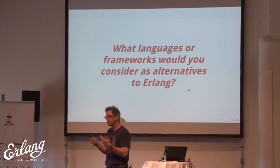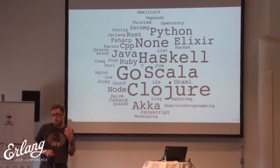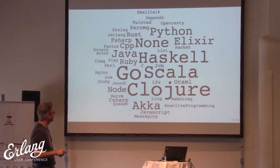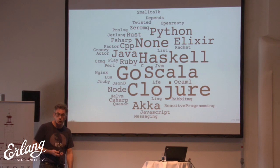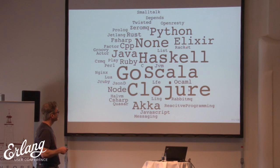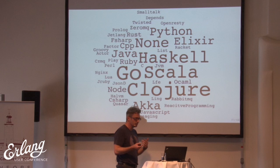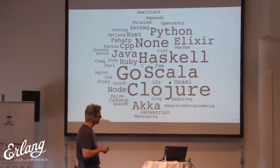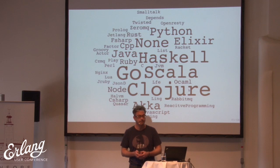What languages or frameworks would you consider as alternatives? Interestingly, in the popularity indexes, this neighborhood was the comparison group. Go came up a lot. Scala and Clojure came up a lot. Haskell came up a lot. Interestingly, 'none' came up a lot — people understand that Erlang is unique and there is no replacement. Elixir and Python also showed up. Elixir and Scala were tied.